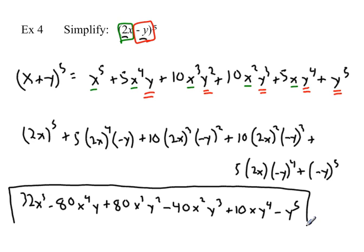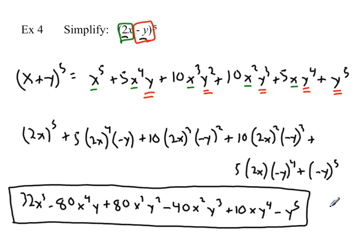If I actually tried to write out the original terms five times and multiply, there's no way I'd get this without making mistakes. So the binomial theorem is a huge shortcut. Remember three things to make it work: first, powers of x go down every time; second, powers of y go up every time; third, the coefficients are those values from Pascal's triangle. Get some practice working on that, let me know what questions you have, and make sure you practice so you can do this confidently.